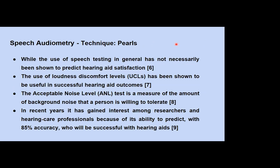Key clinical pearls from the literature: while speech testing in general has not necessarily been shown to predict hearing aid satisfaction, the use of Loudness Discomfort Levels (UCL) has been shown to be useful for successful hearing aid outcomes. The Acceptable Noise Level, which measures the amount of background noise a person can tolerate, has gained interest among researchers and hearing care professionals because of its ability to predict with 85% accuracy who will be a successful hearing aid candidate.